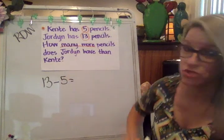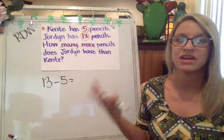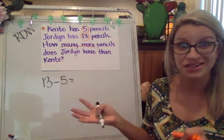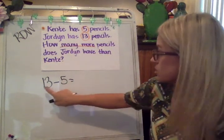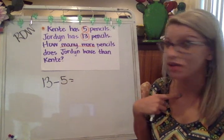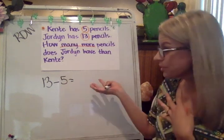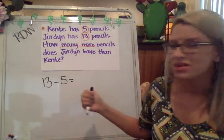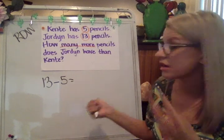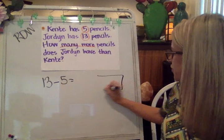So we're going to subtract. If it asked how many do they have together, how many in all, that would be addition. But 'how many more' is a comparison. So 13 minus five. How am I going to solve that? You could count on, count up, count back. Is this a near doubles fact? No, it's not.